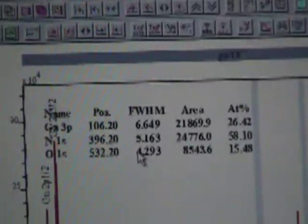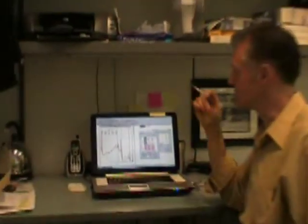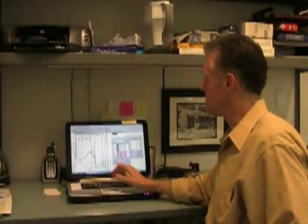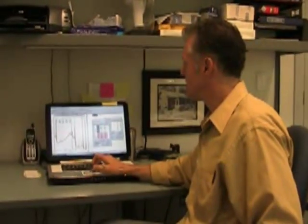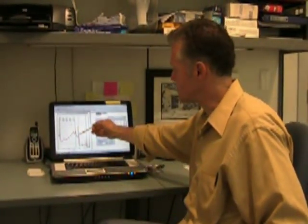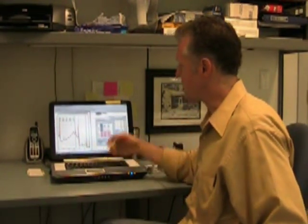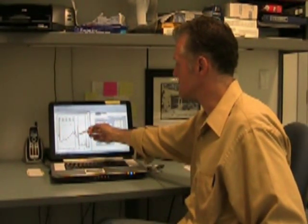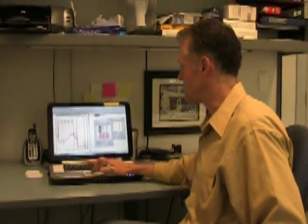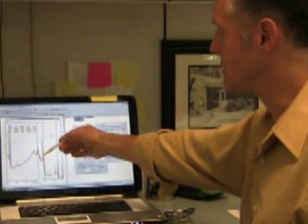So in other words we have more than twice as many nitrogens as we do galliums. And on the surface of things that would seem to be a big problem because it's supposed to be gallium nitride, the formula for which is GaN. In other words there should be the same amount of gallium and nitrogen atoms. But again, as we said before, this nitrogen peak, so-called, here, is not all nitrogen.